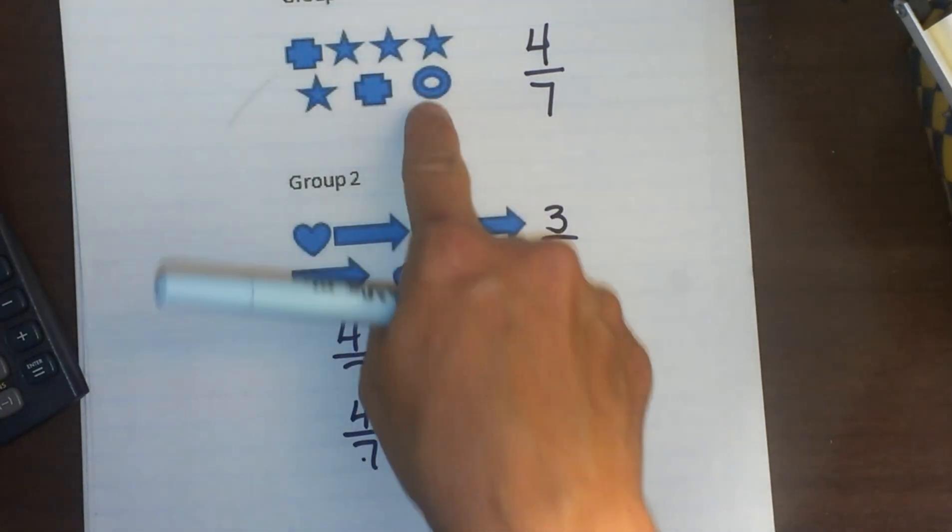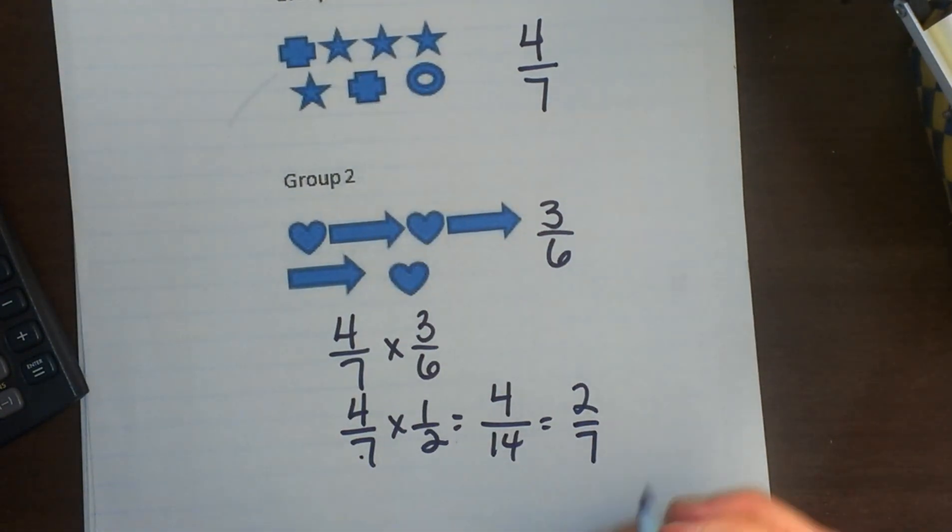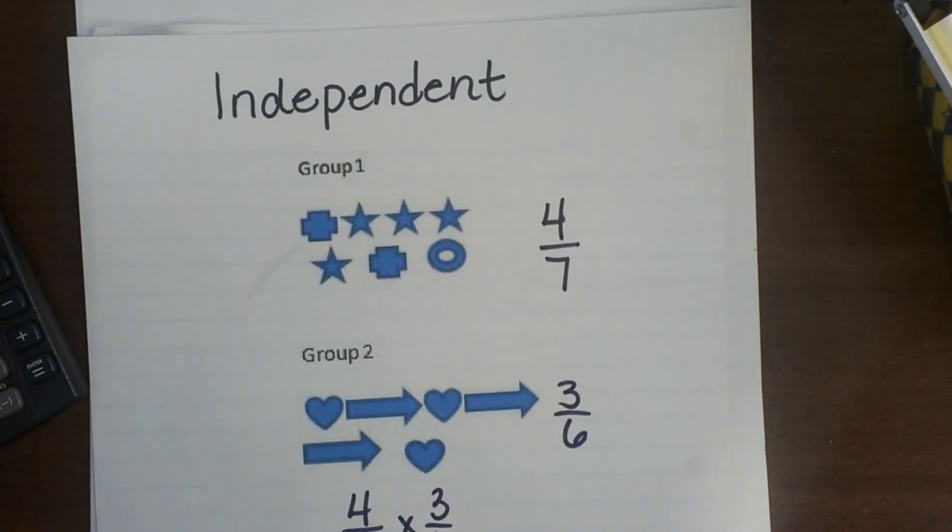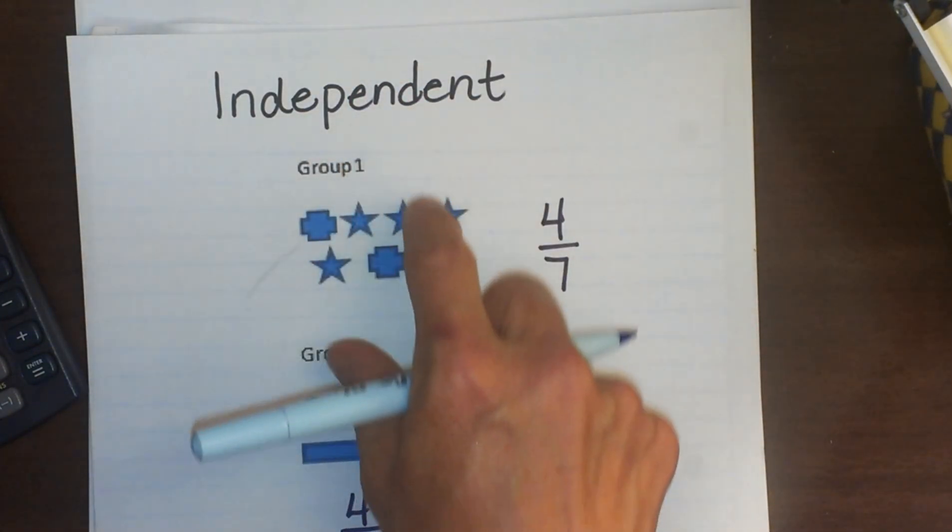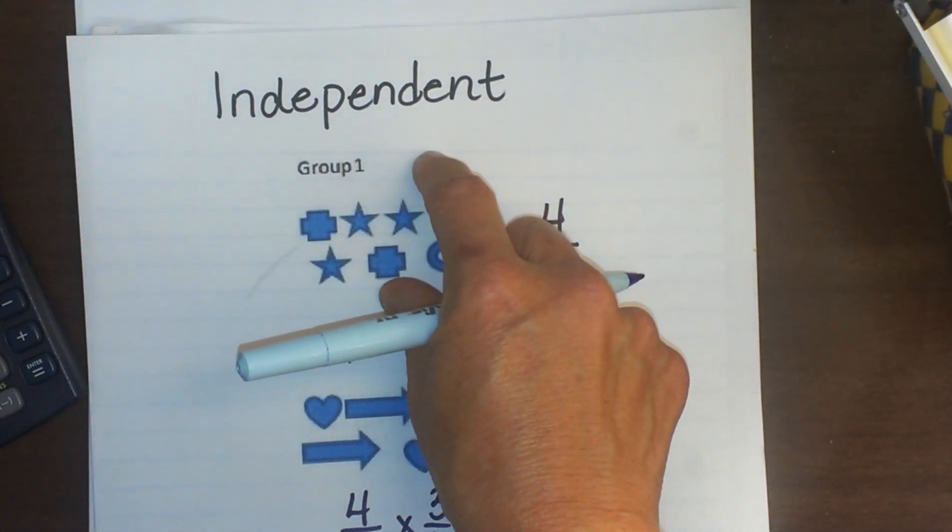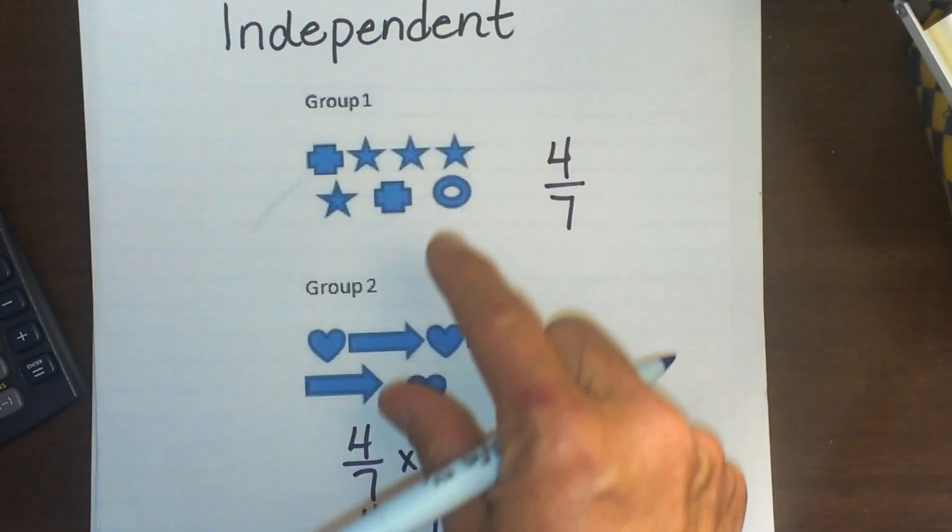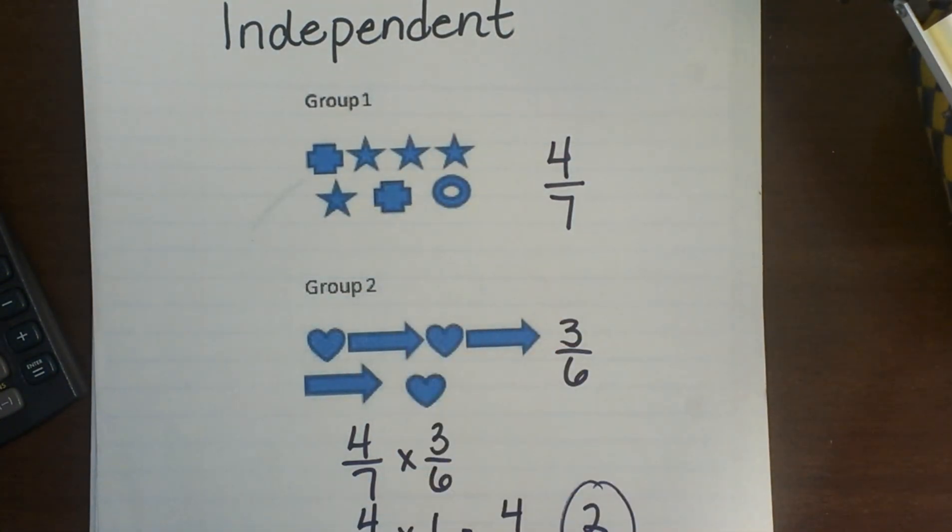So the probability of those two events occurring would be two-sevenths. And those two again are independent events because choosing a star from this group does not affect drawing an arrow from the second group.